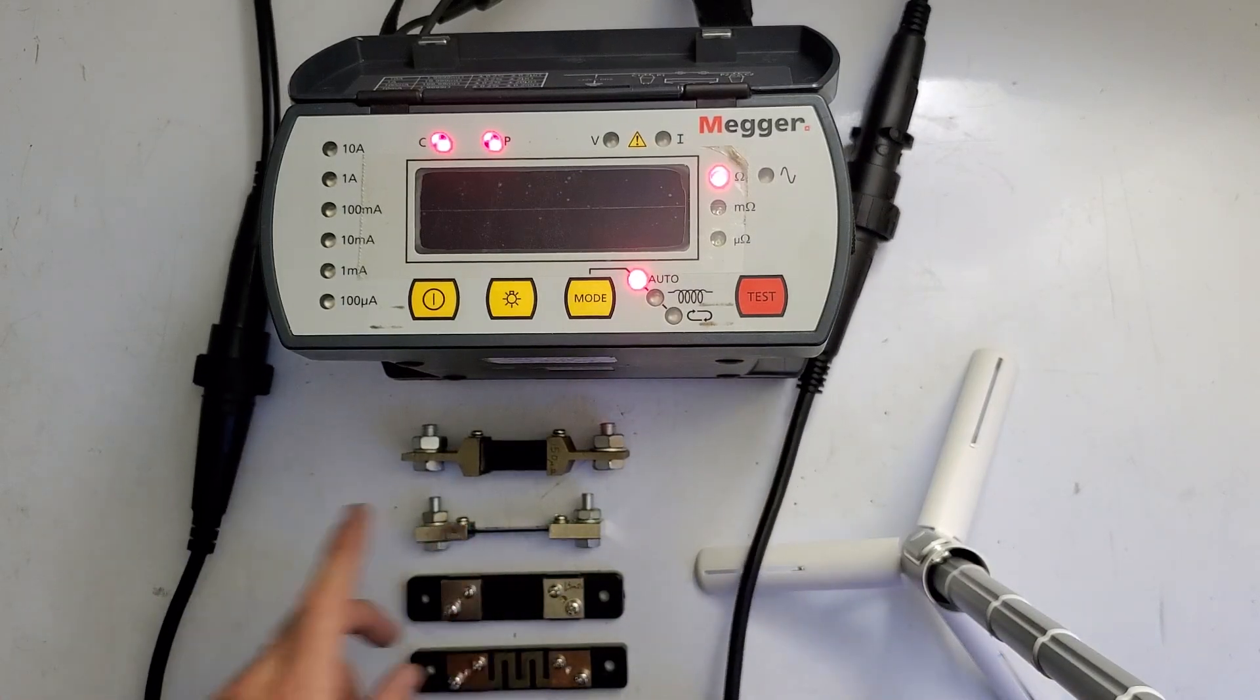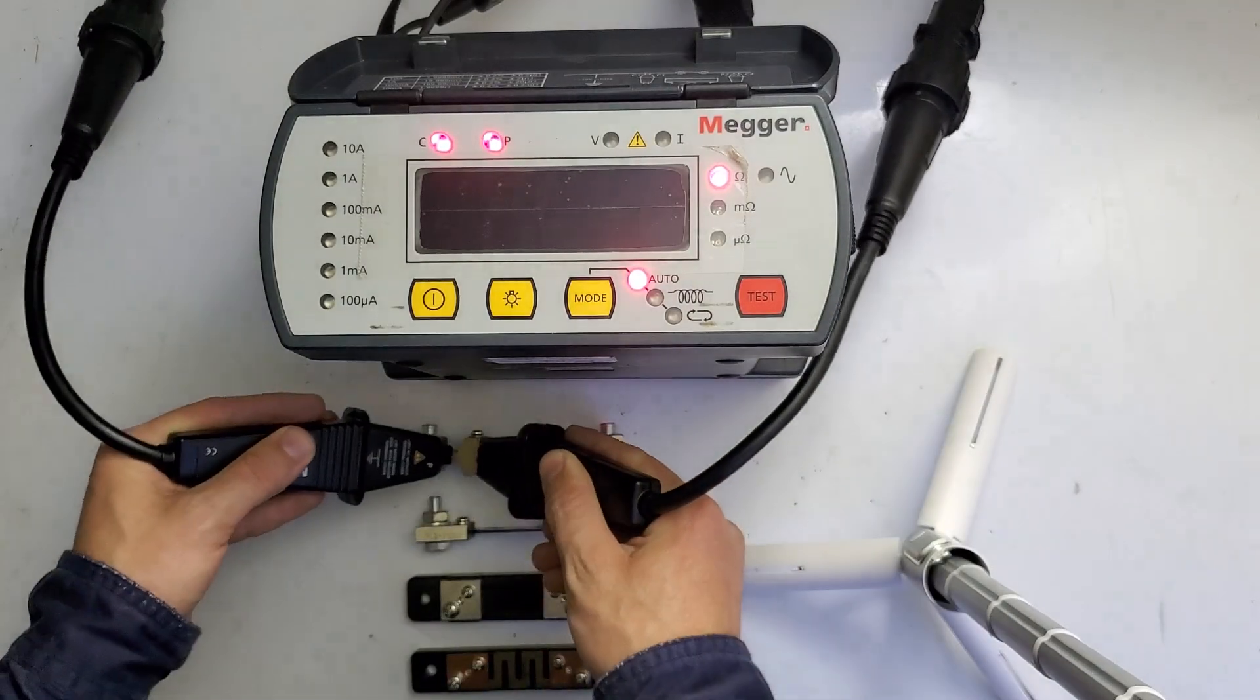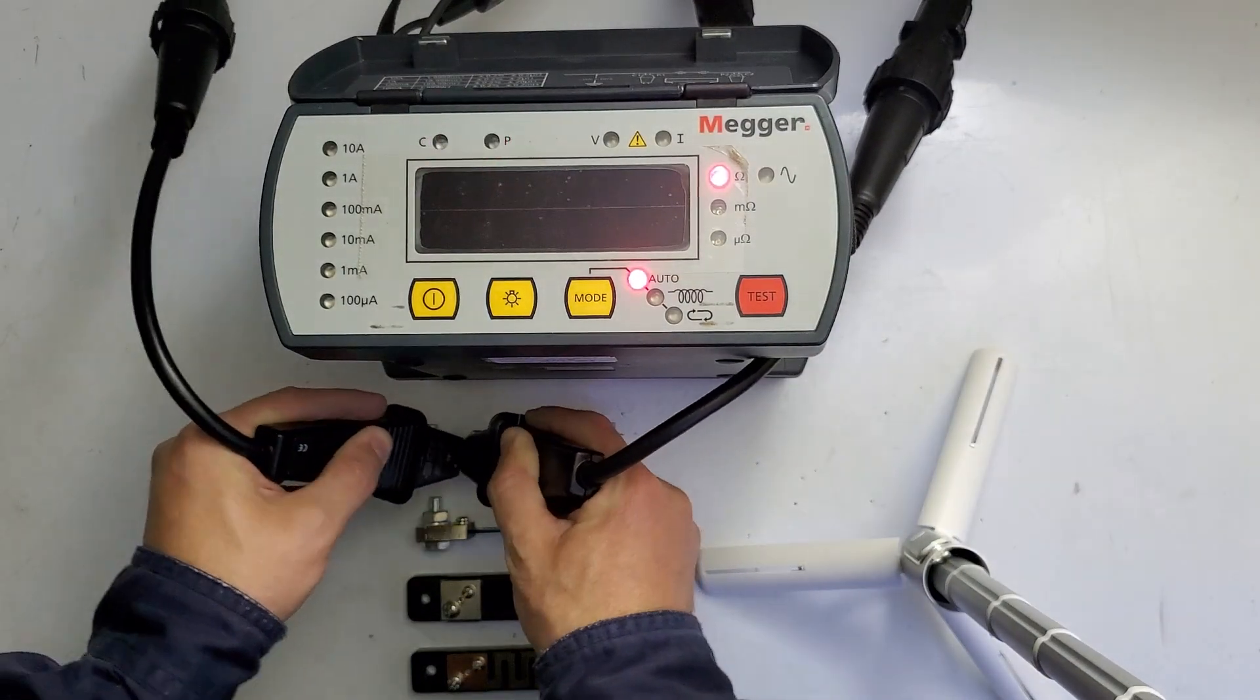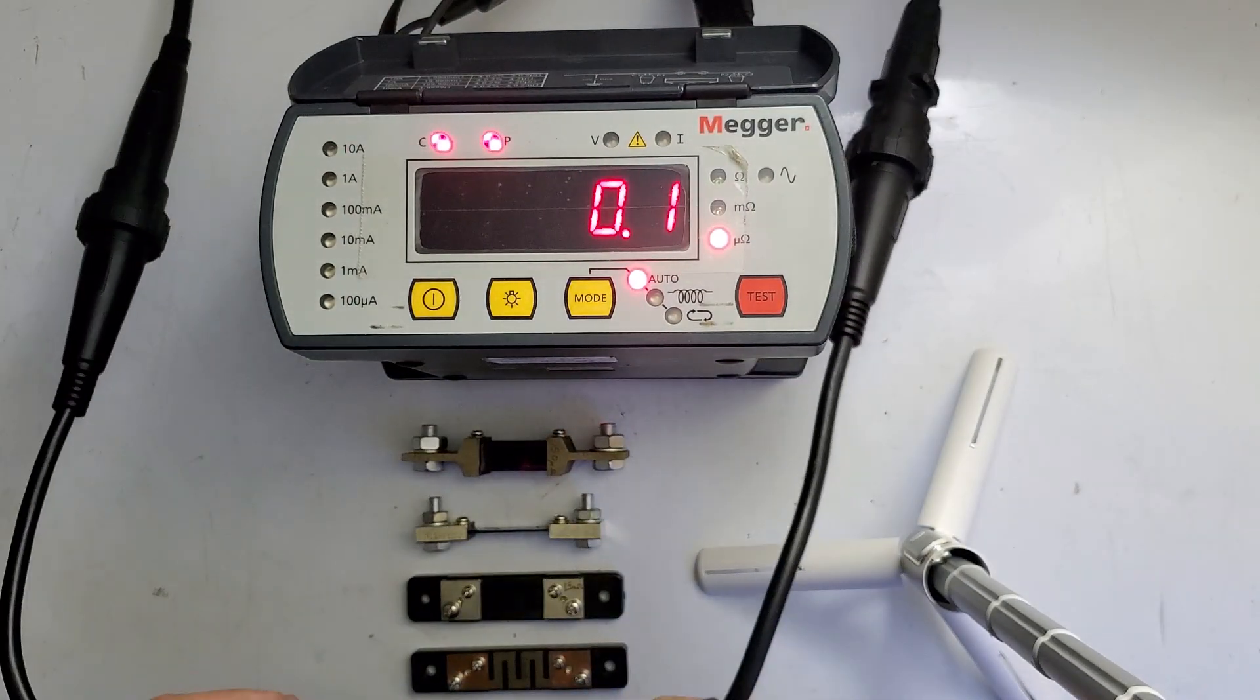We're going to do a quick little demo. The first thing I always do with my DLROs before I use them is I short the two leads together and I measure. I should get almost zero, which is 0.1 micro ohms, almost a flat-out perfect reading.